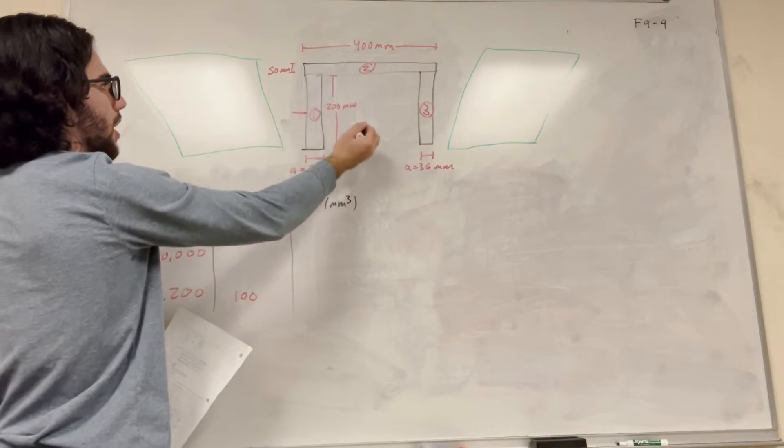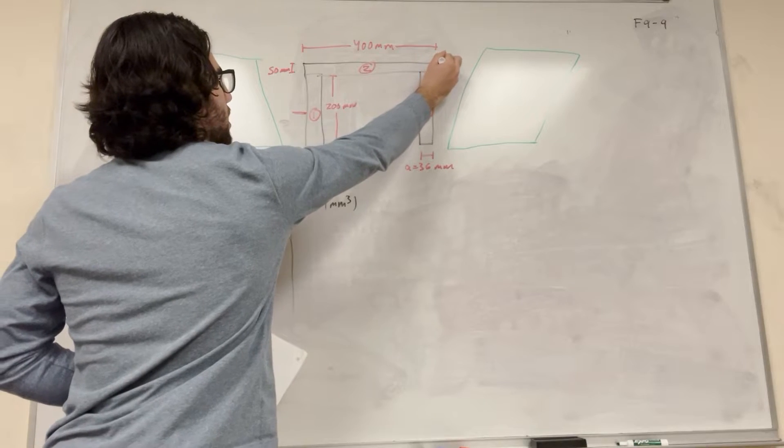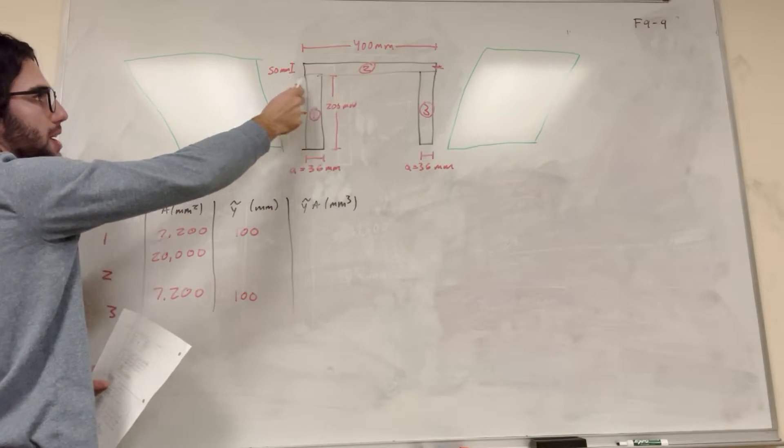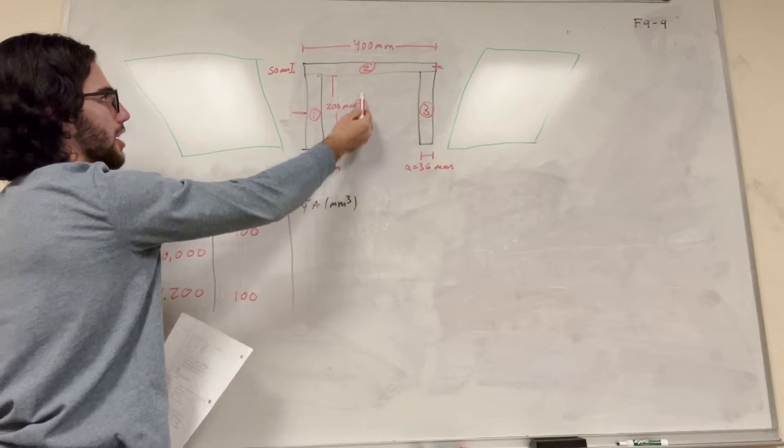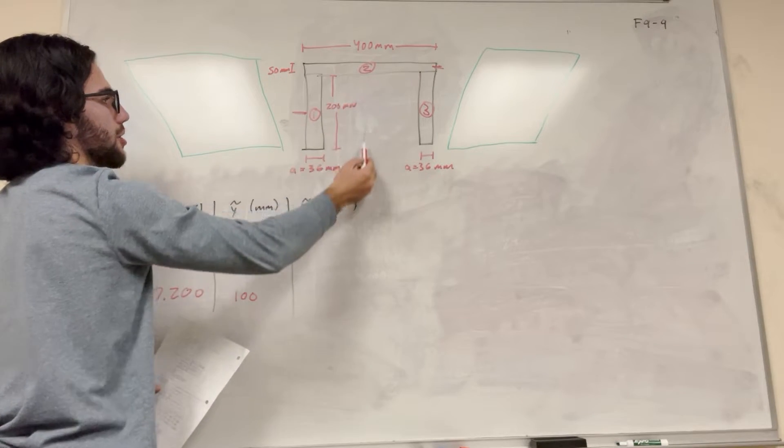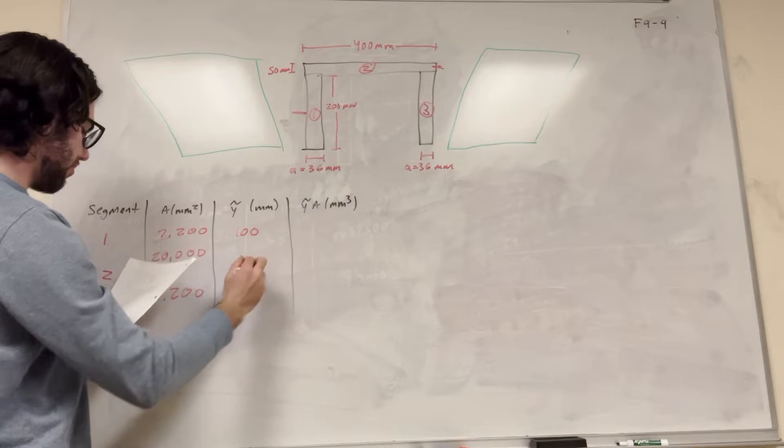So then for segment 2, well, you're going to have to be halfway up segment 2. So it's going to be 25 millimeters up, but it's 25 up from this. So you're going to take the 200, 200 plus half of 50. So 200 plus 25, 225 millimeters.